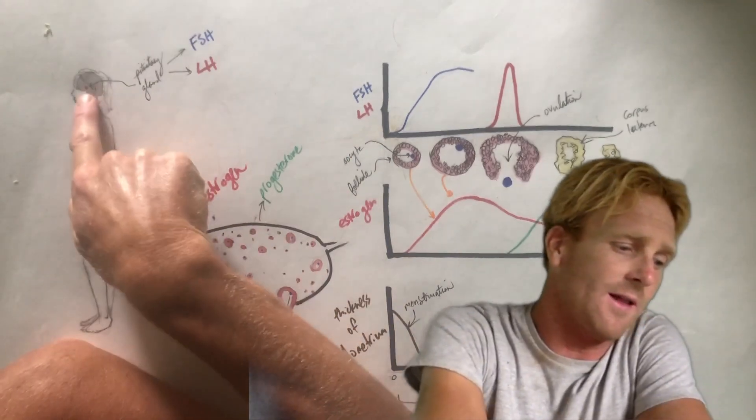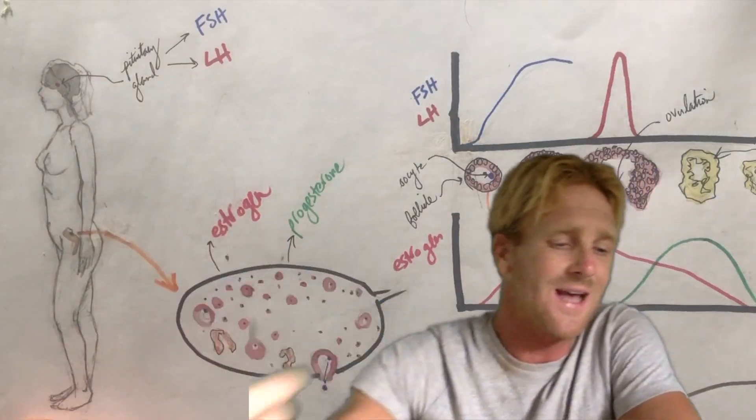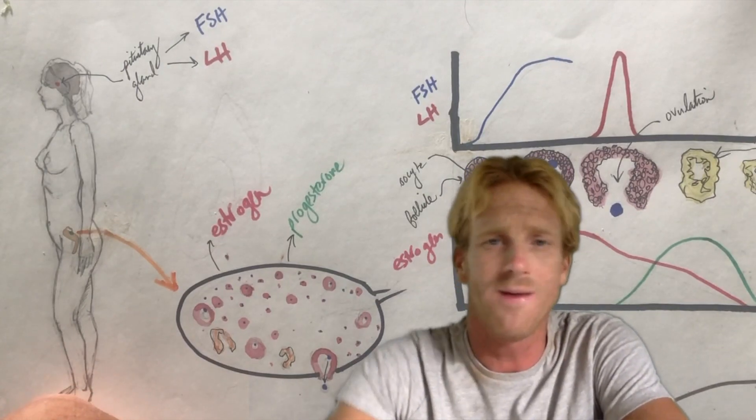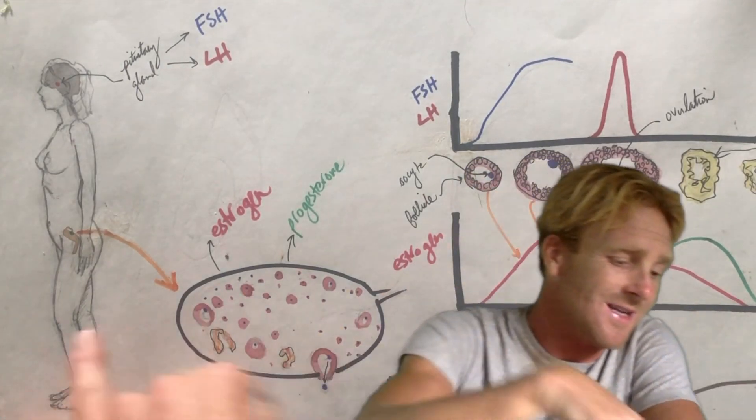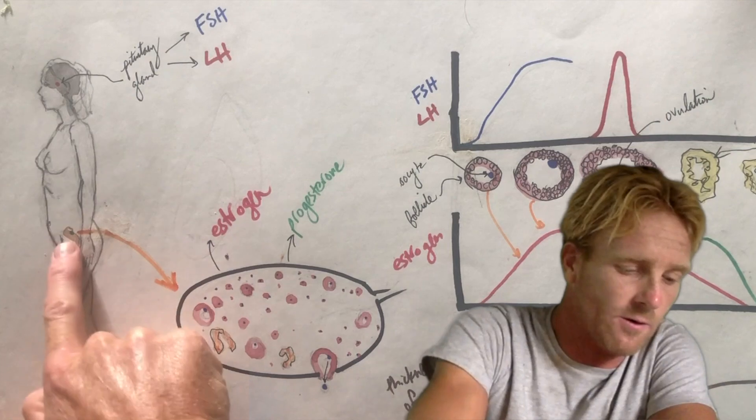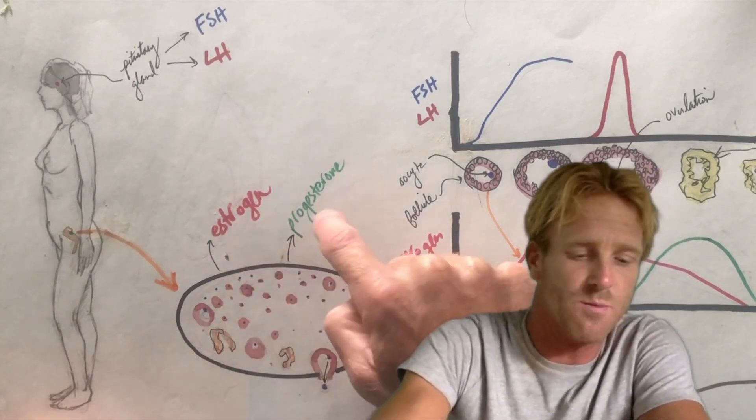The first is the pituitary gland which lies in the brain. That's this little red dot. It's going to release FSH, follicle stimulating hormone, and LH, luteinizing hormone. The second organ is the ovary. This little green dot is going to release estrogen and progesterone.